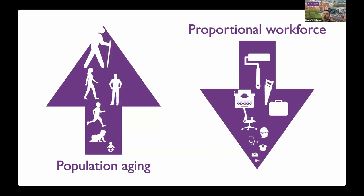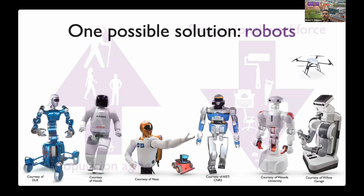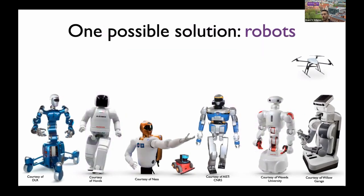As a roboticist, one of the possible solutions I envisage is the use of robots. We have different types of robots ranging from mobile robots, mobile manipulators, humanoids, and aerial vehicles, and so forth, which brings lots of technical and scientific challenges. This is because modern robotic systems can be very, very complex.